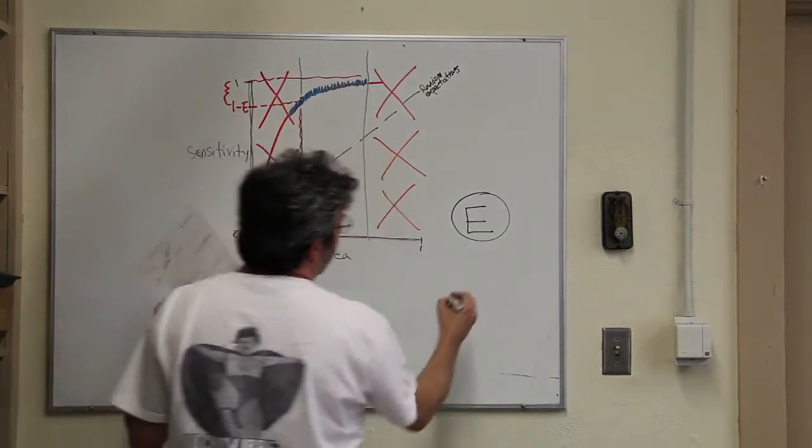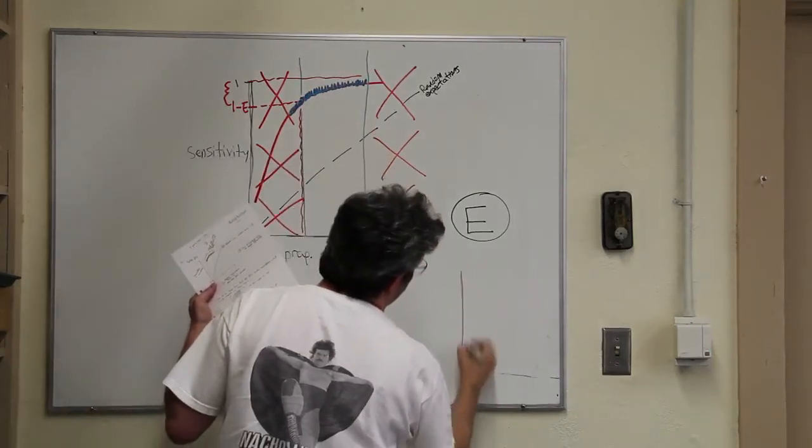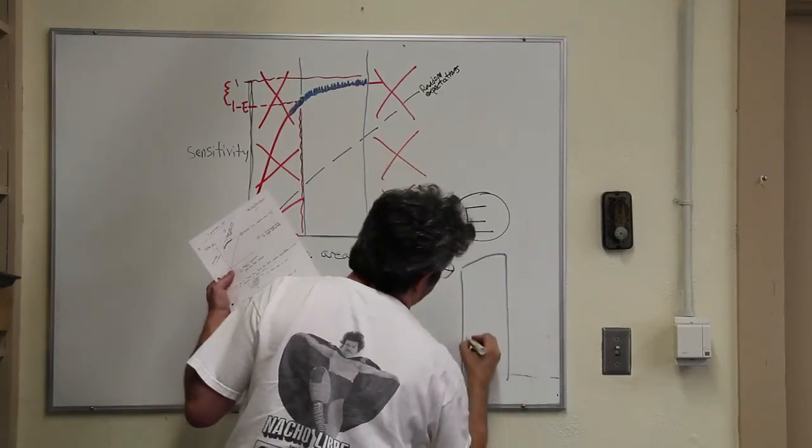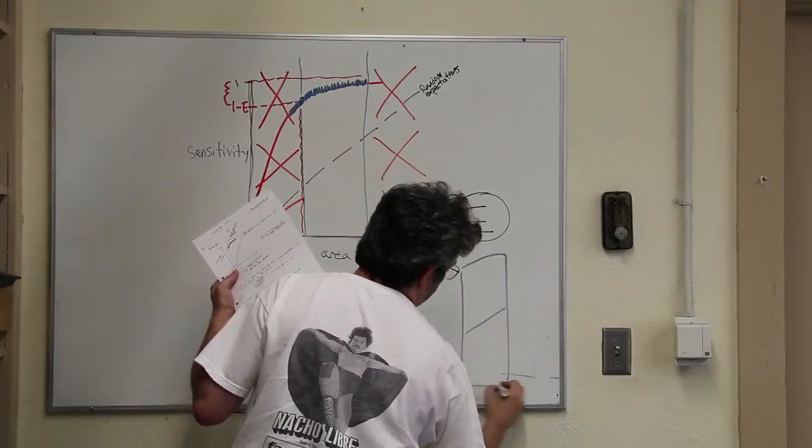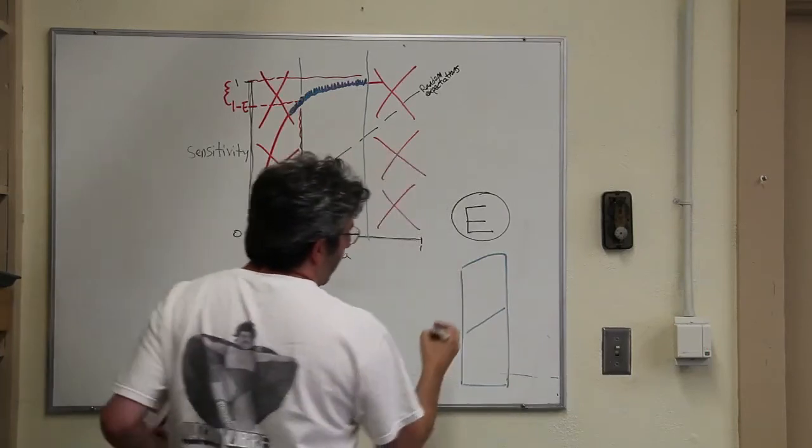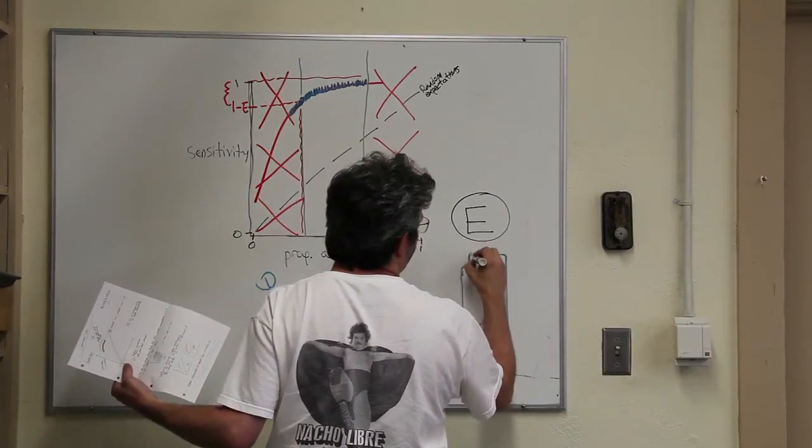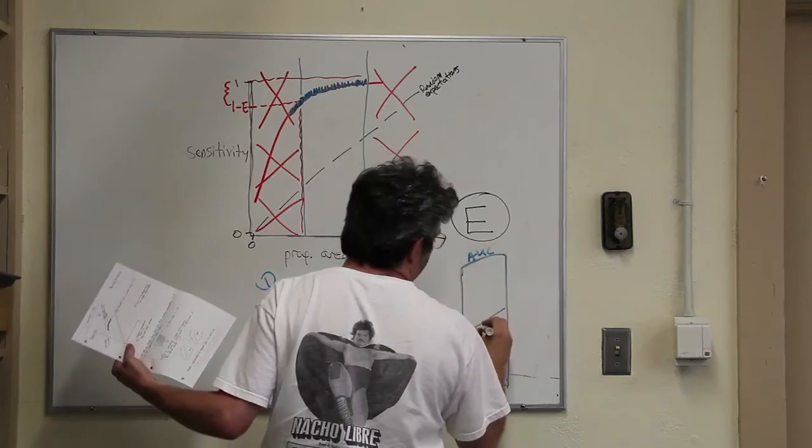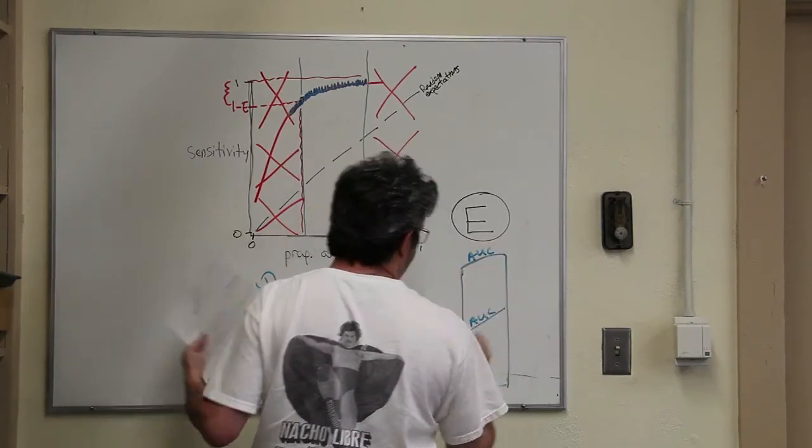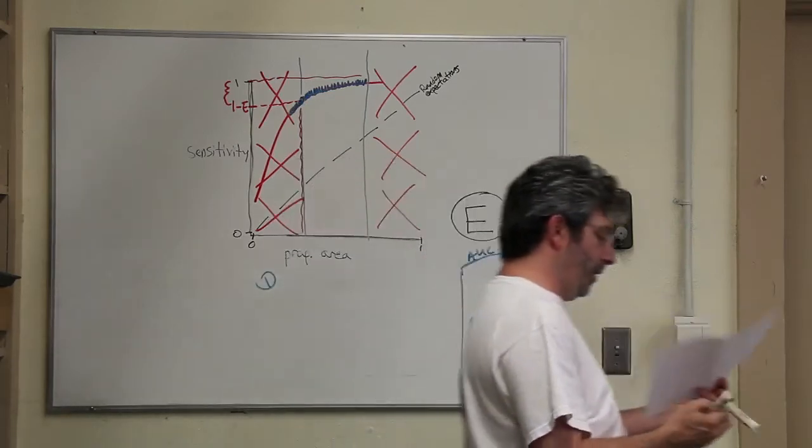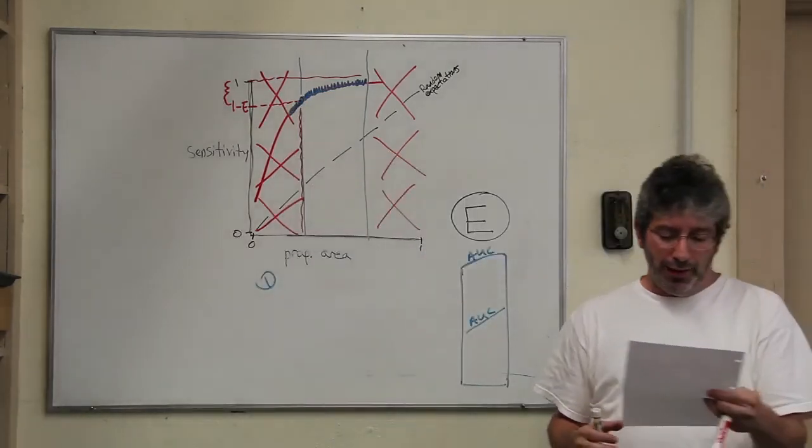And so now we're left with a ROC curve that's very partial. It's just this area and that's our random expectations. So really what our question looks like is kind of like this. And what we're going to do is compare the area under this curve to the area under this curve. This is the idea of a partial ROC analysis.